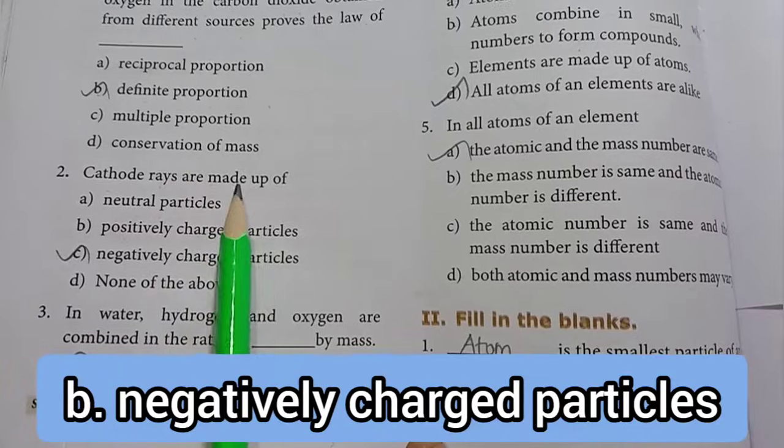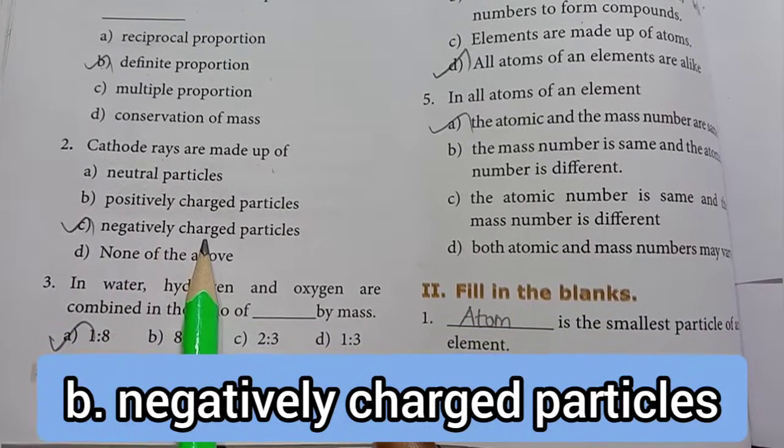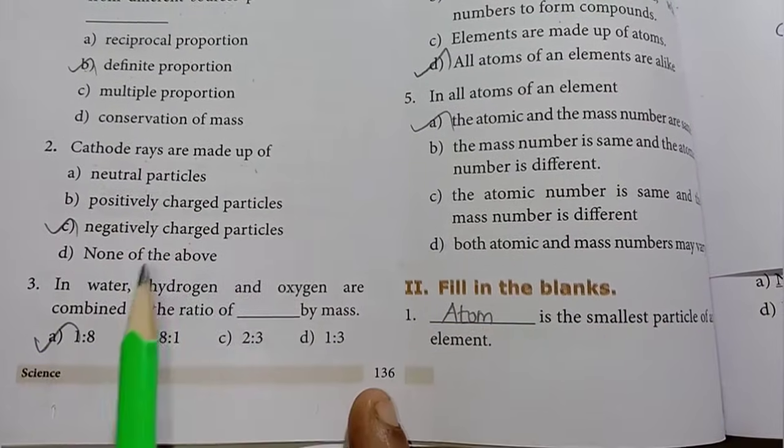Cathode rays are made up of... Option C, negatively charged particles, is the right answer.